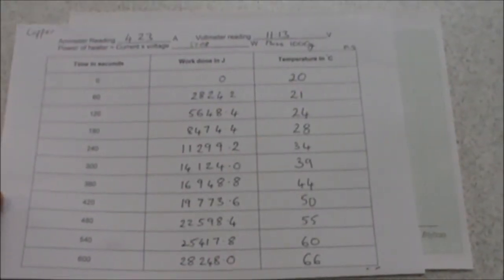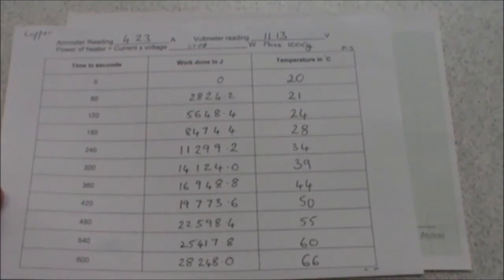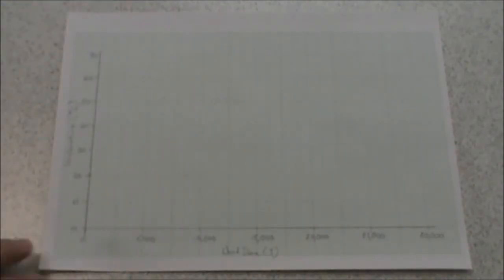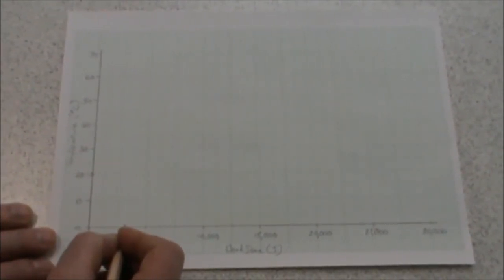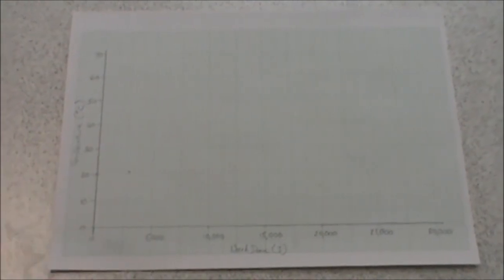My next value is 2824.2 and 21 degrees. If I look at my scale, every two squares is 500. So 2800 is just a little bit over 2750. Here's 2500, there's 3000, there's 2750, and I want to go to 21, which is one square up from the previous result.